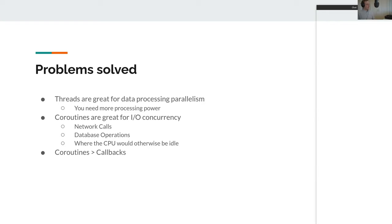If we think about threads and coroutines: threads are a great solution for data processing parallelism. If you need more processing power to process big amounts of data, a coroutine working concurrently isn't necessarily going to make the data processing faster. You still have, say, 10 gigabytes of data to go through. With multiple threads, you can work in parallel — one thread starts at element zero, one at element 10,000, and so forth. If your computer has 12 cores, you can use 12 threads and it will go faster.